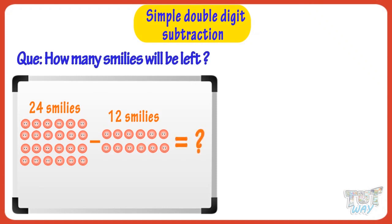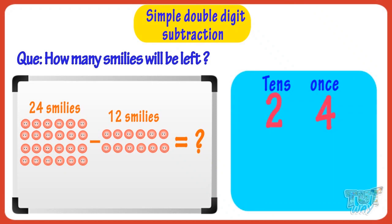Let me help you calculate. Write the bigger number first, that is 24. 2 is in the tens place. 4 is in the units place or ones place. Now take the other number, that is 12.